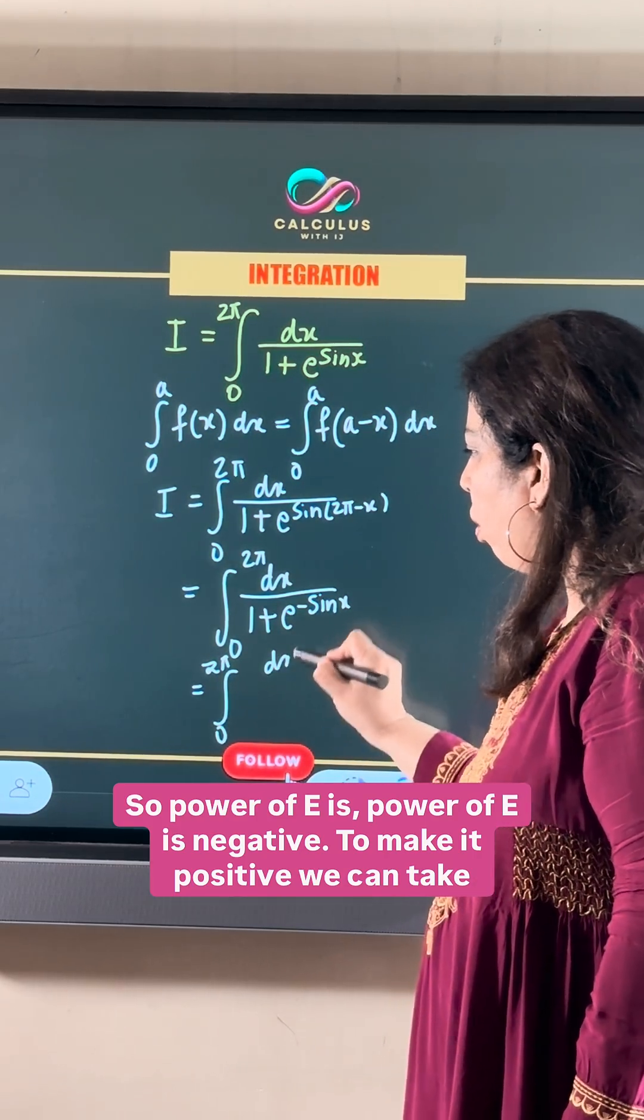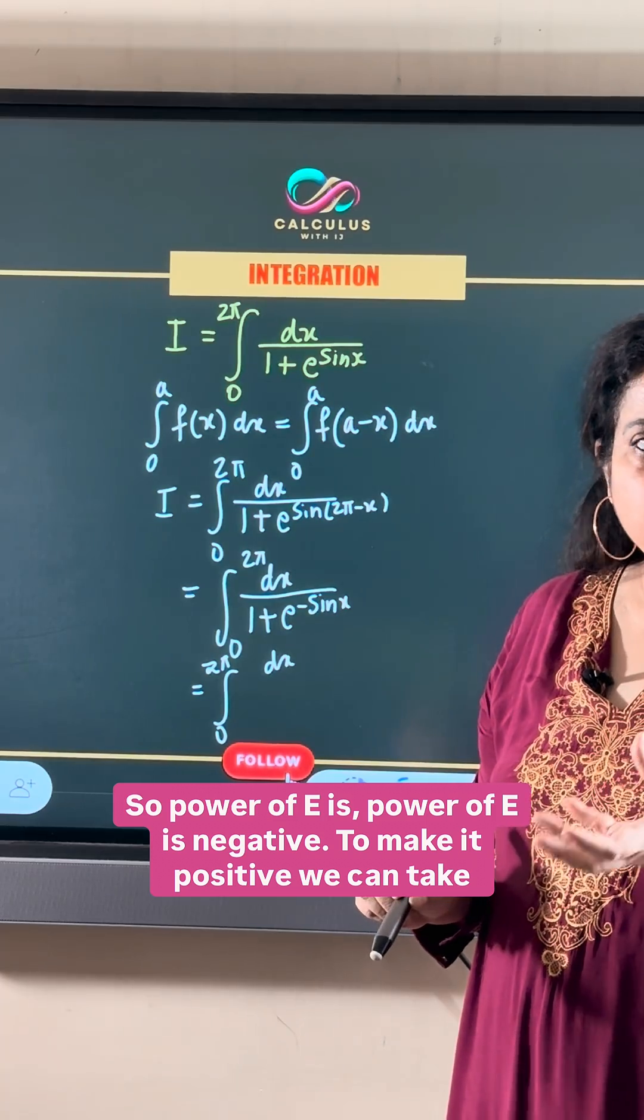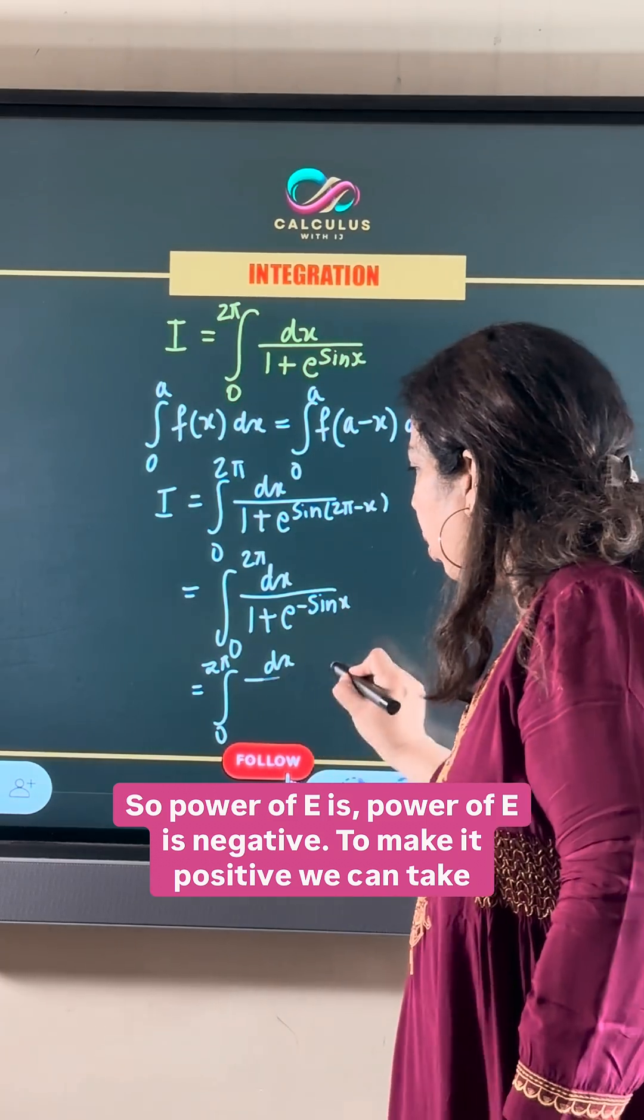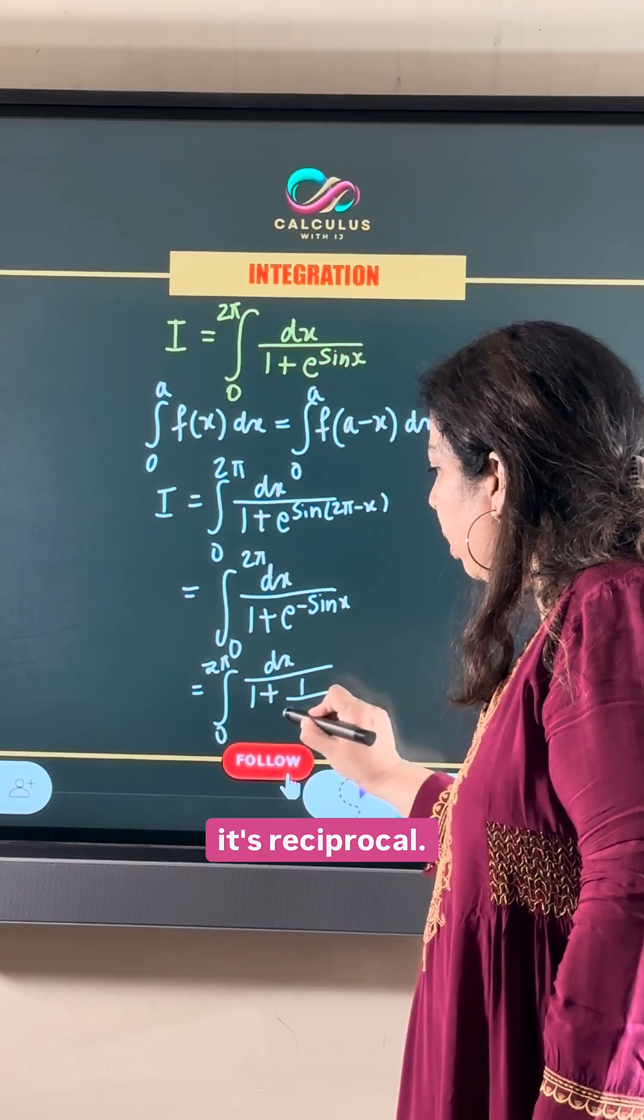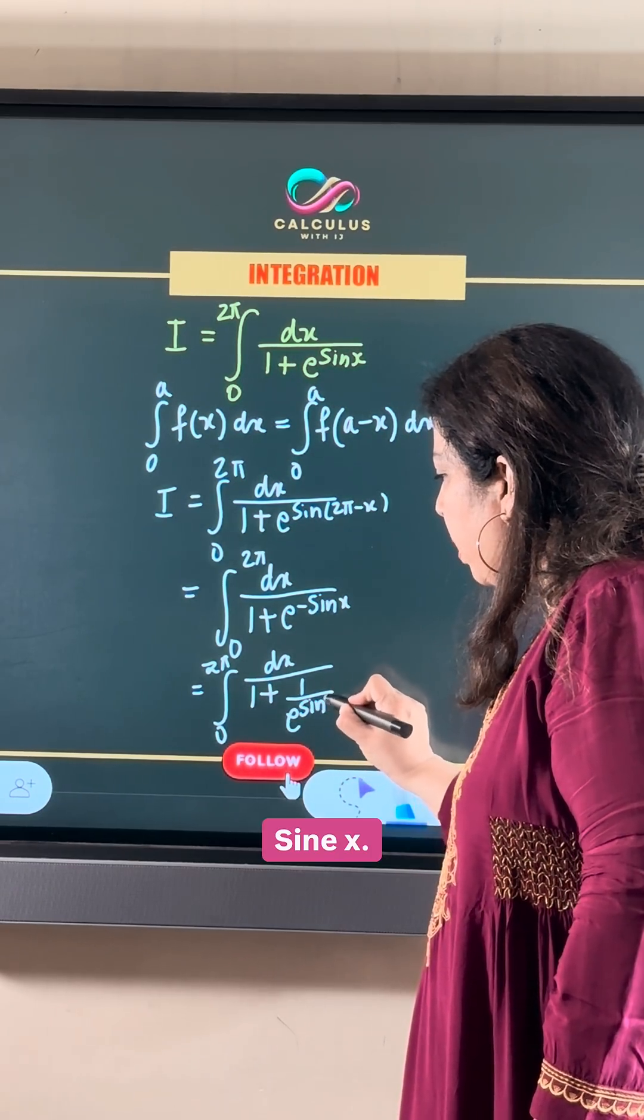So the power of e is negative. To make it positive, we can take its reciprocal. So 1 upon e raised to power sin x.